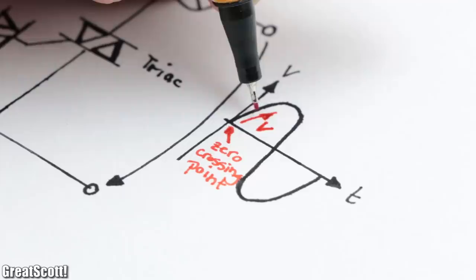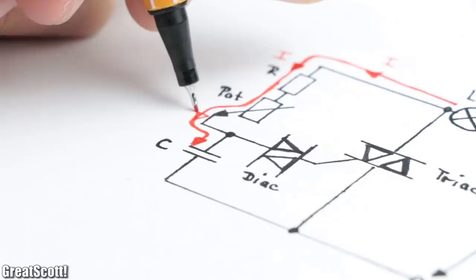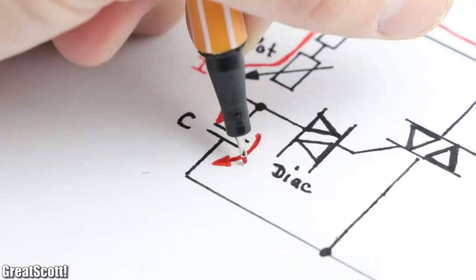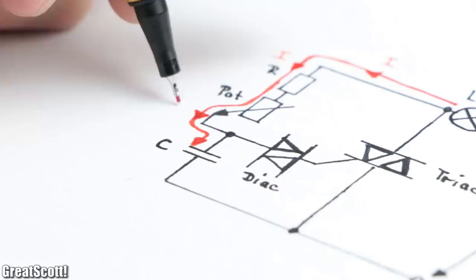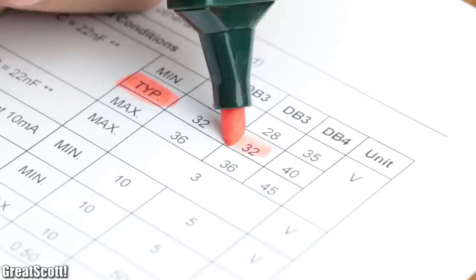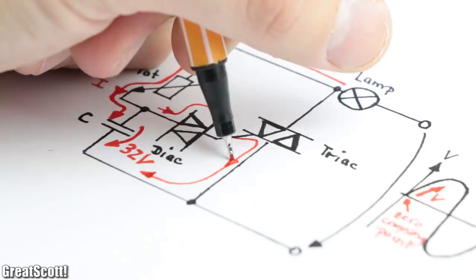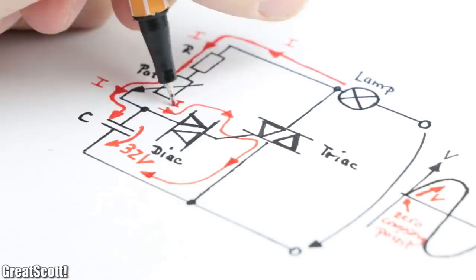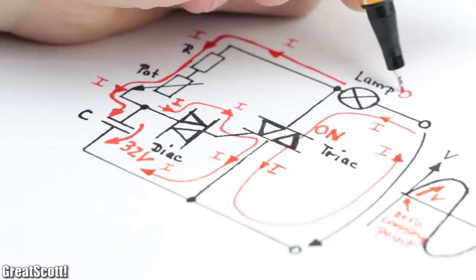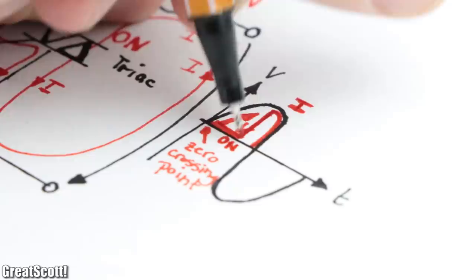To understand how it works let's imagine we got our AC sine wave voltage applied. After the zero crossing point the voltage slowly increases which charges up the capacitor through the resistor and potentiometer. The capacitor voltage increases up to a value of for example 32 volts which is the break over voltage of our diac. At this voltage the diac becomes conductive and thus the capacitor discharges through it and through the gate of the triac which turns it on and thus lets current flow through the light bulb for the remainder of this half wave.